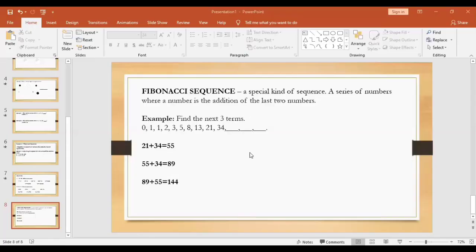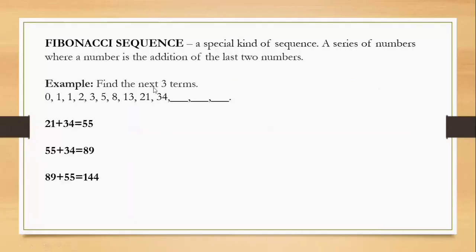And so we have the solution on how to get the next 3 terms. We will just need to add the previous 2 numbers to get the next term. 21 plus 34, that is equal to 55. After 55, we just need to add 55 plus 34, we will get 89. 89 plus 55 is equal to 144. Are we clear? That's good. So therefore, the next 3 terms of this given Fibonacci sequence is 55, 89, and 144.